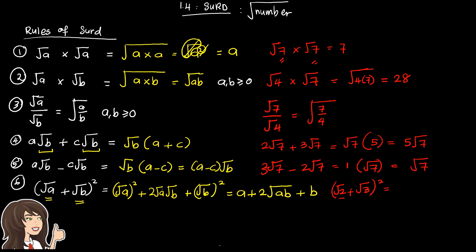Example for Rule 6: (√2 + √3)². The first term: √2 squared = 2. The last term: √3 squared = 3. The middle term: 2 × √2 × √3 = 2√(2×3) = 2√6. So the final answer is 2 + 3 + 2√6 = 5 + 2√6.